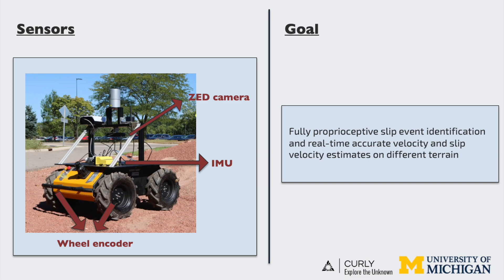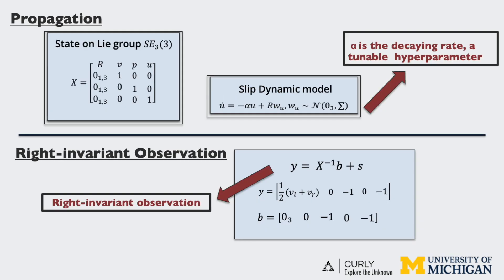The OPSAM3 system from Z-camera is used to give ground truth pose in outdoor experiments. In the propagation step, we firstly embed the slip velocity into the SE(3) Lie group. Then, we design a constant coefficient linear homogeneous slip dynamic model inspired by the following observation.